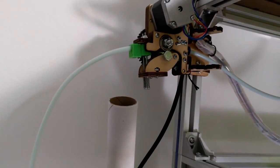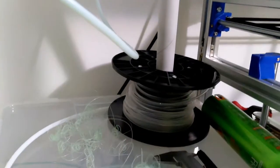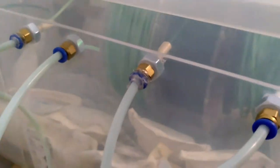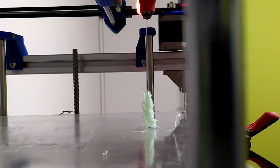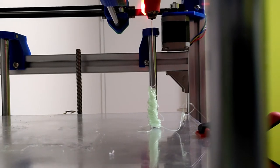Another tube is providing the filament from the box in which different filaments are stored, so that no air should be in contact with the filament even during longer prints.